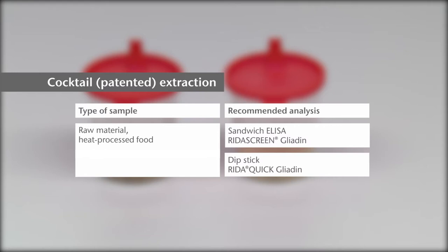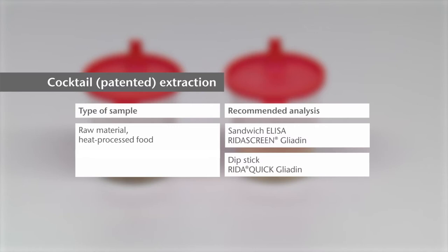The cocktail patent is used for extraction of raw materials and heat-processed samples for subsequent analysis by dipstick RIDA QUICK Gliadin or sandwich ELISA RIDASCREEN Gliadin. The cocktail patent should not be used for subsequent analysis by competitive ELISA RIDASCREEN Gliadin competitive.